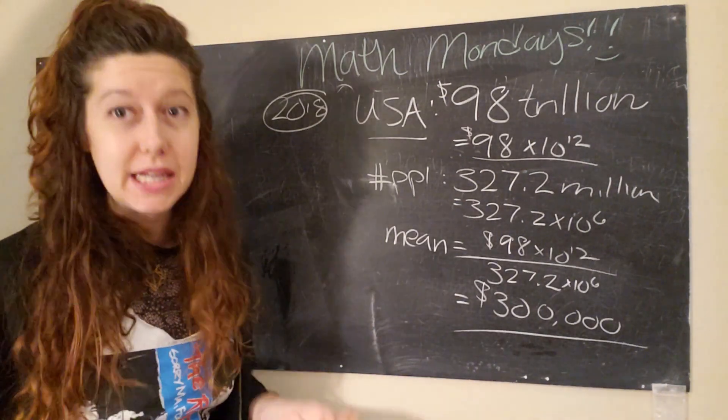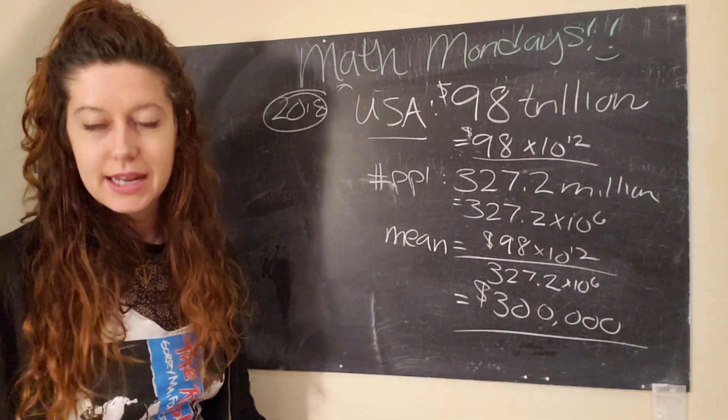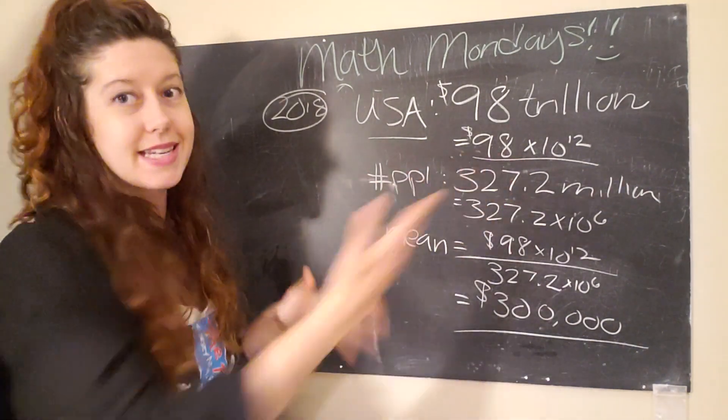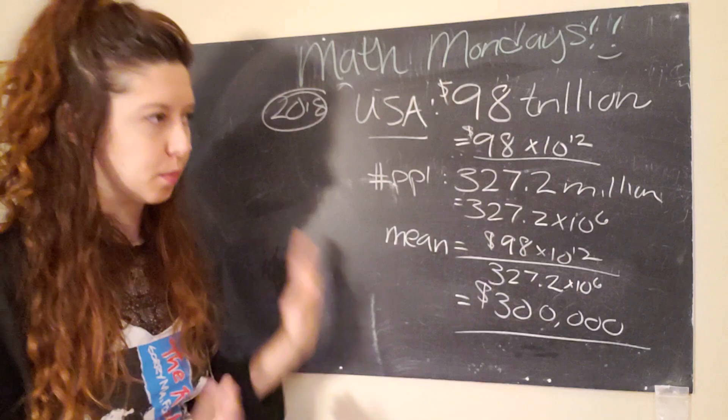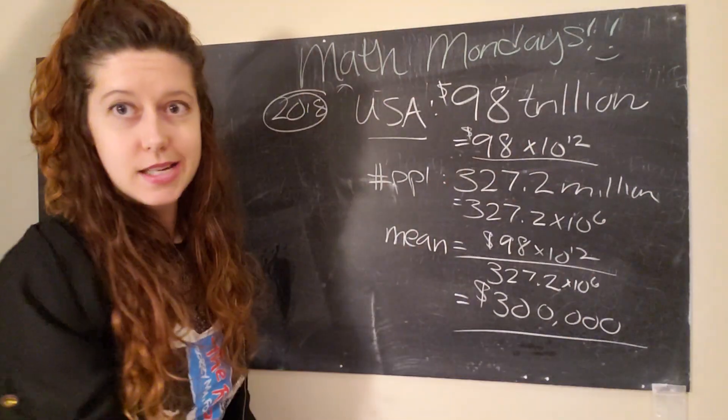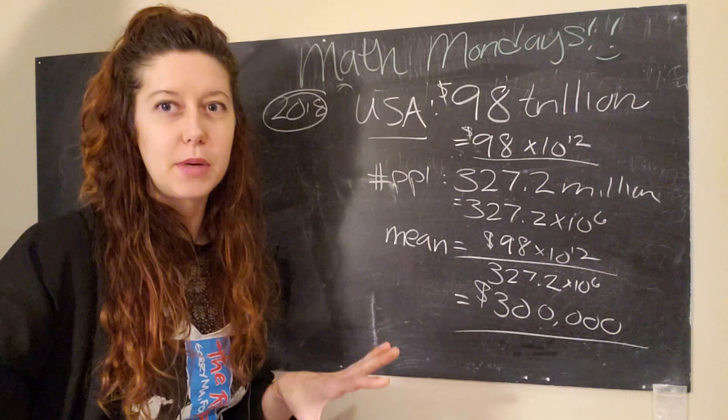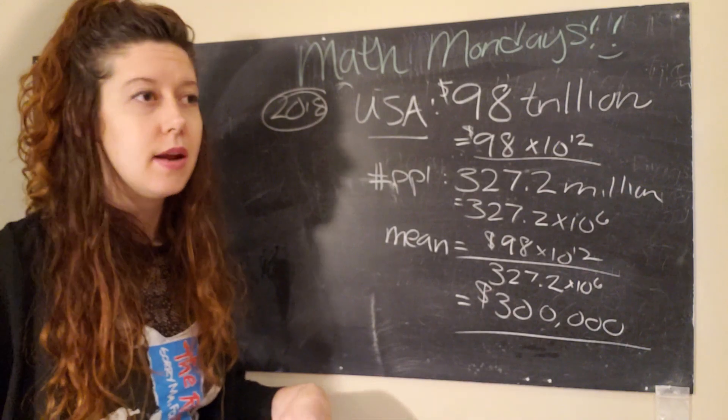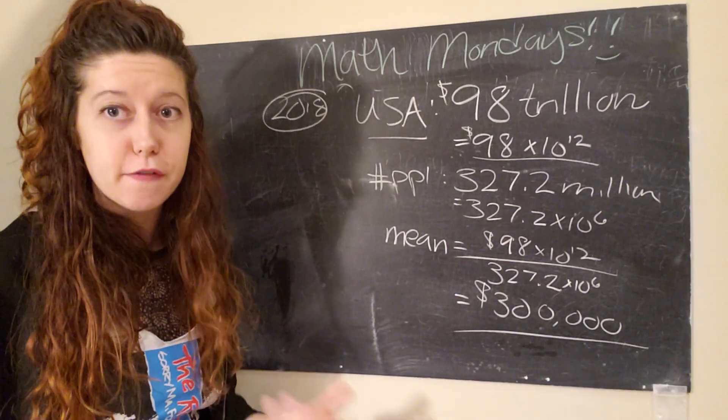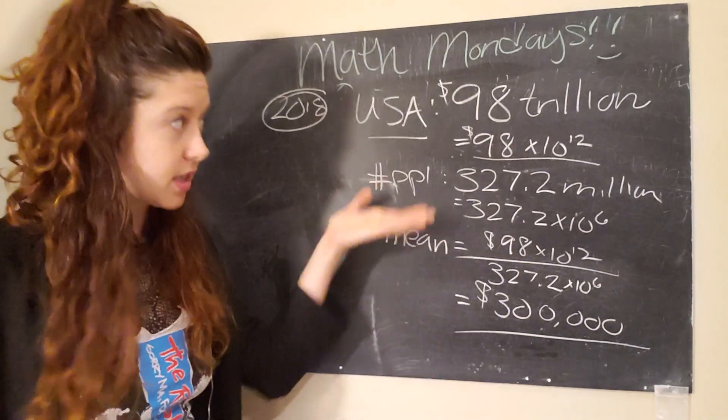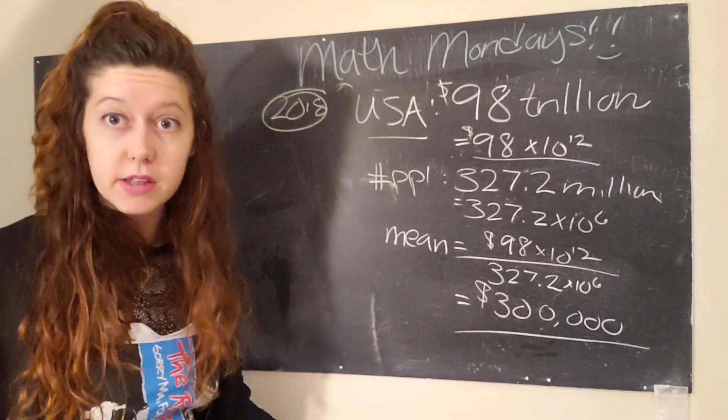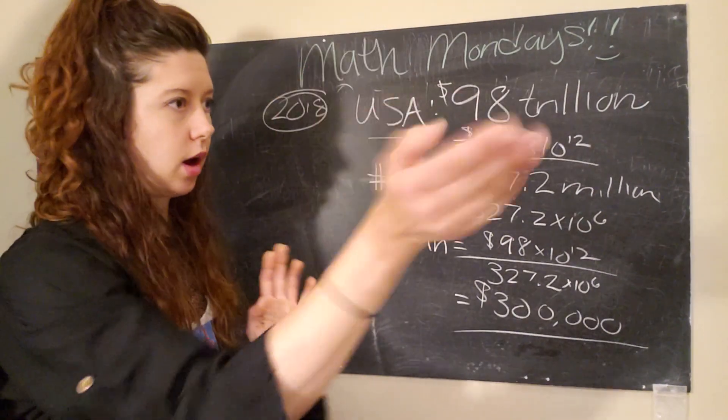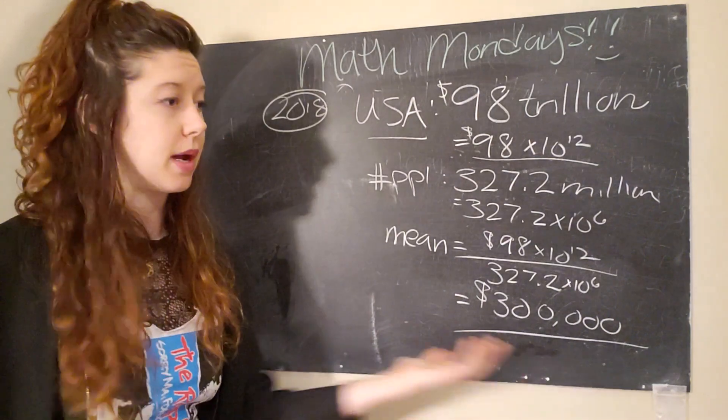A more representative data point, when talking about wealth, would actually be median. So, again, median is the middle. And so, that's where if you were to organize everybody by the amount of wealth that they had from lowest to highest, and then you were to draw a line perfectly in the middle. So, half of the people have more than that line, and half of the people have less than that line. That would be a much more representative figure because wealth is not distributed evenly. And so, this number is actually skewed by people on the higher end as well as by people on the lower end.